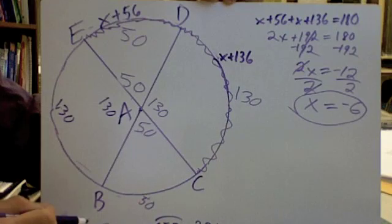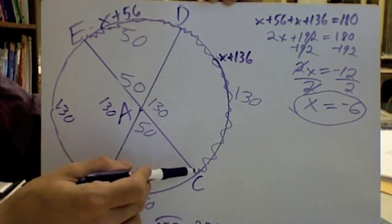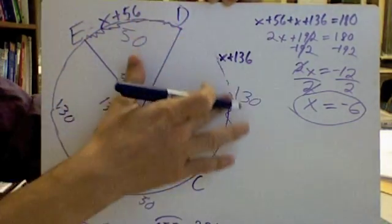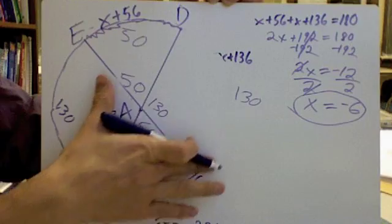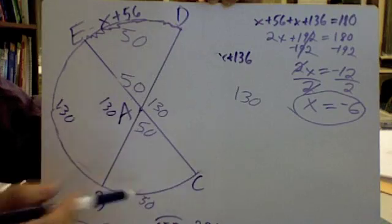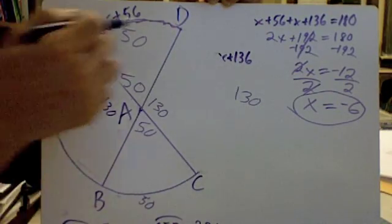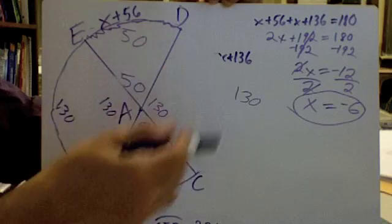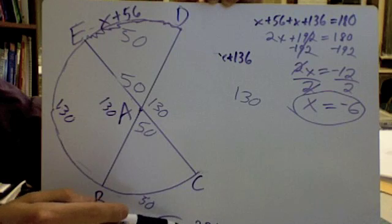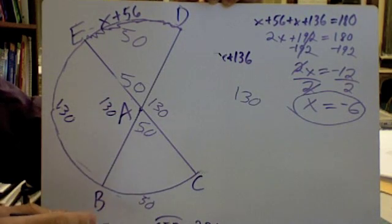There was one other way you could have gotten arc CED. Since you wanted this section of the circle right here, we didn't want this section, we just wanted this. Since we knew this part was 130 and the entire circle is 360, well, if we just cut this part out by subtracting it, 360 minus 130 is 230. So I mean, either way you'll get 230. It doesn't really matter which way you do it.